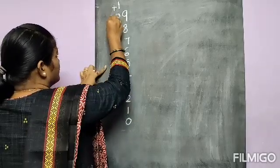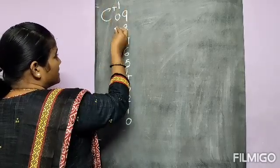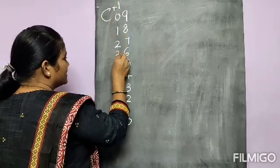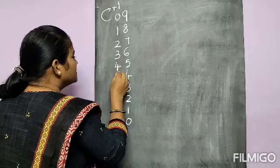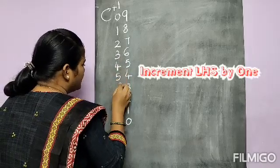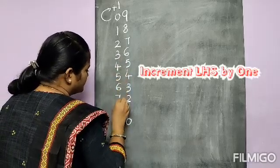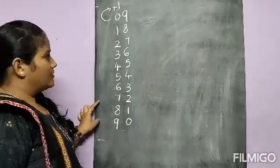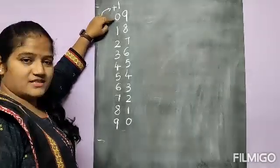0 does not have any value if we write it before any number. 0 plus 1 is 1, 1 plus 1 is 2, 2 plus 1 is 3. Like that, you have to increase the number by 1. We know the 9 table: 9, 18, 27, 36, it goes on.